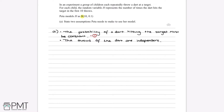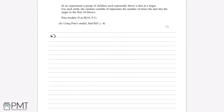We also have to use the word 'independent', which gets us our second mark. Part B is now asking us to use Peter's model and find the probability of H being greater than or equal to 4.